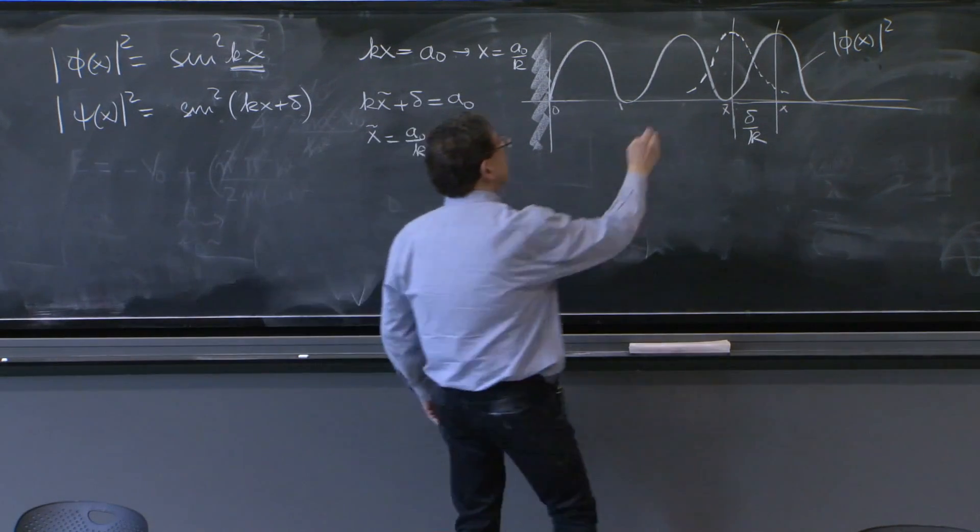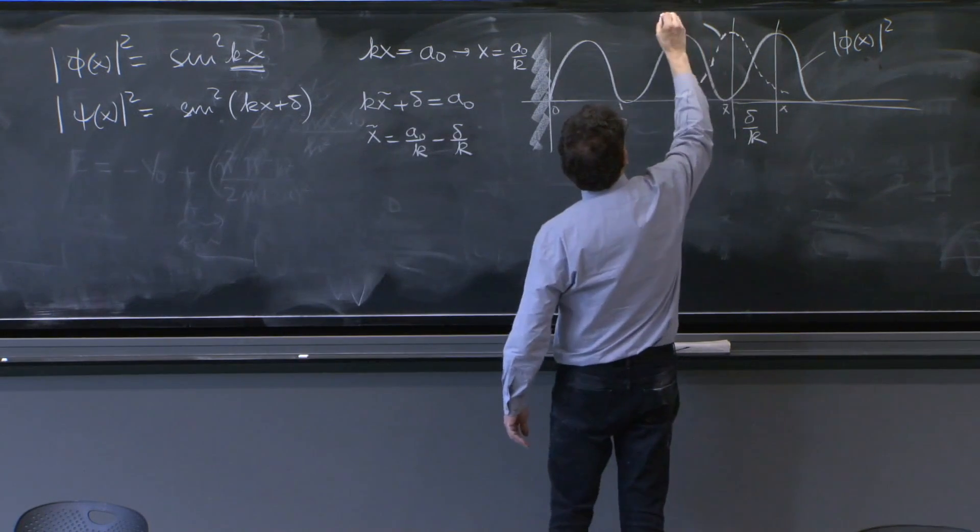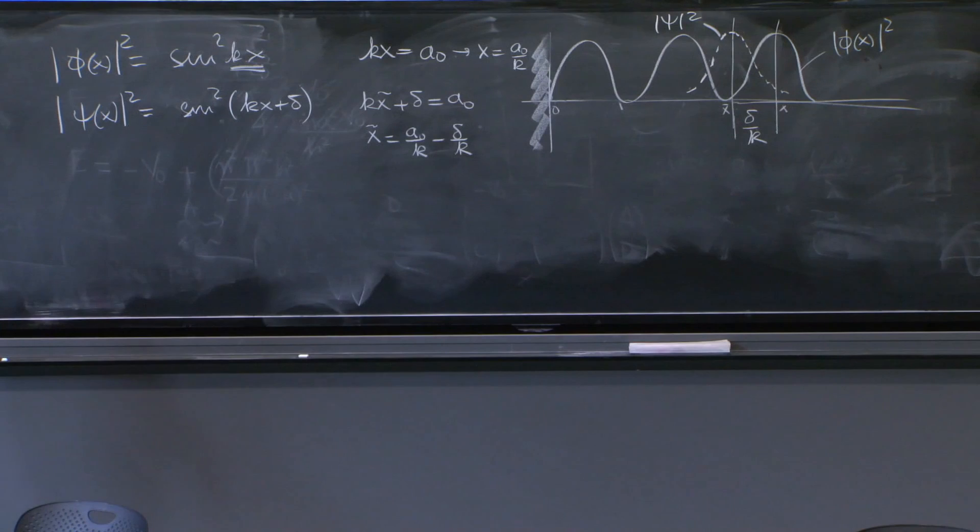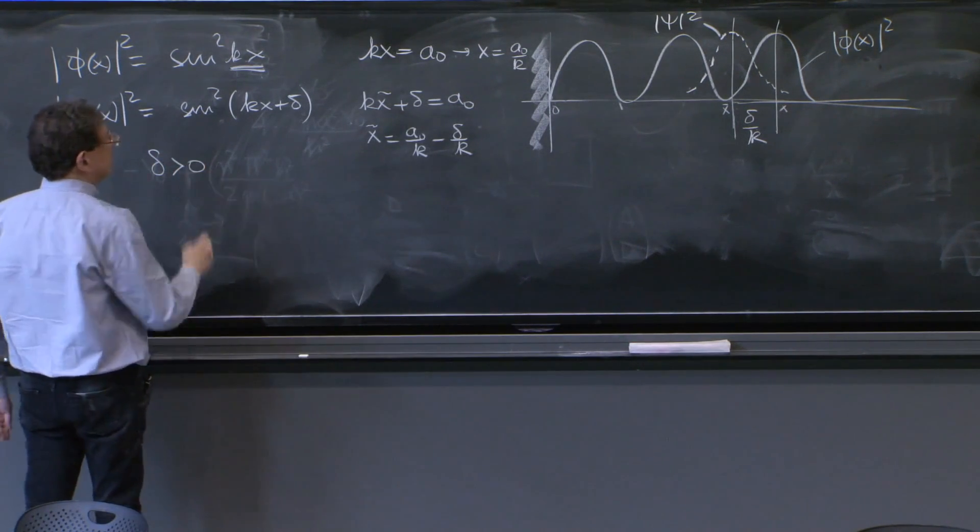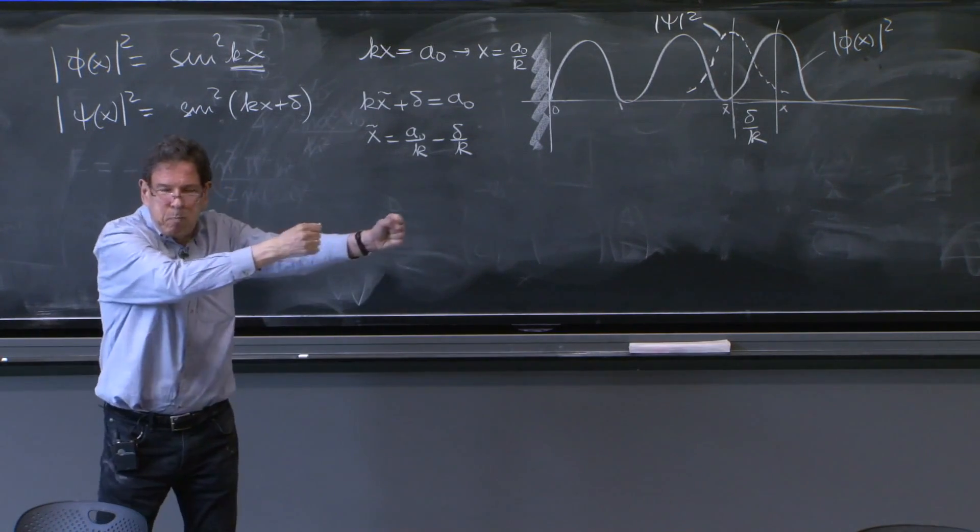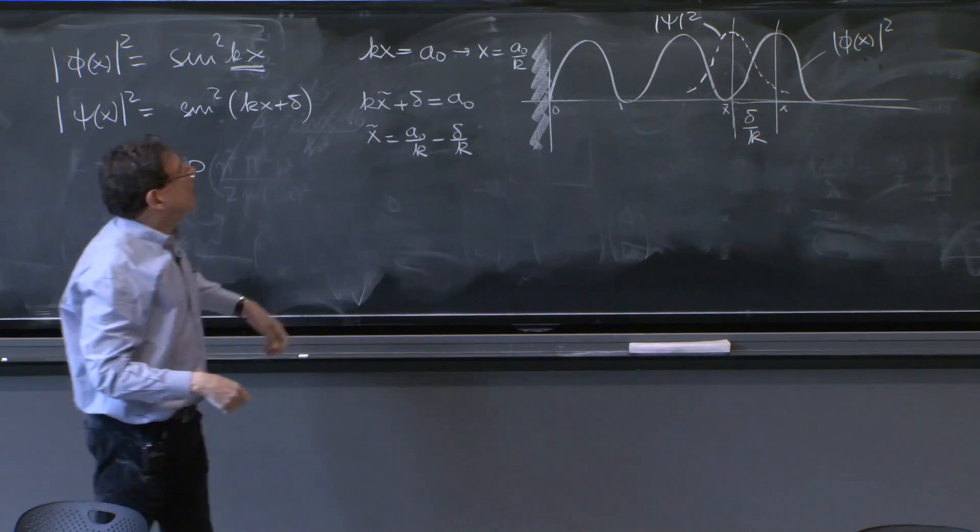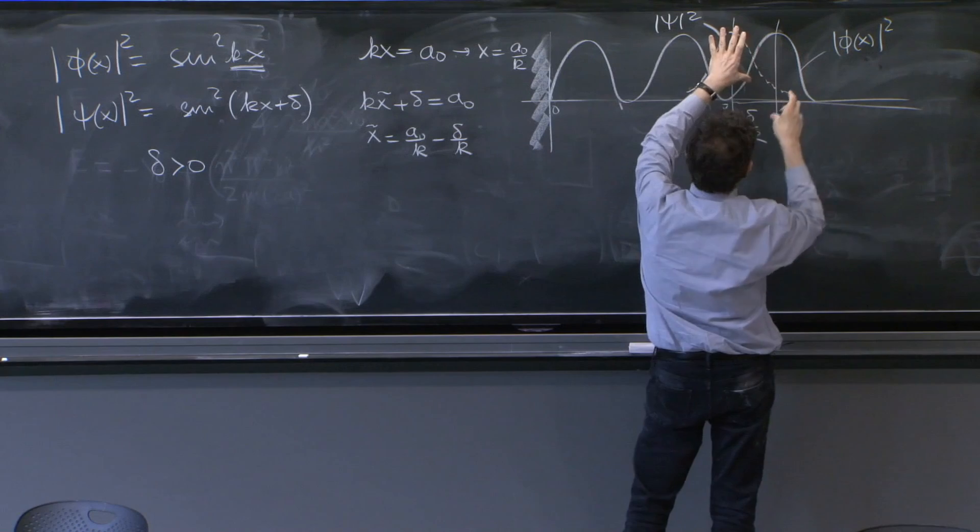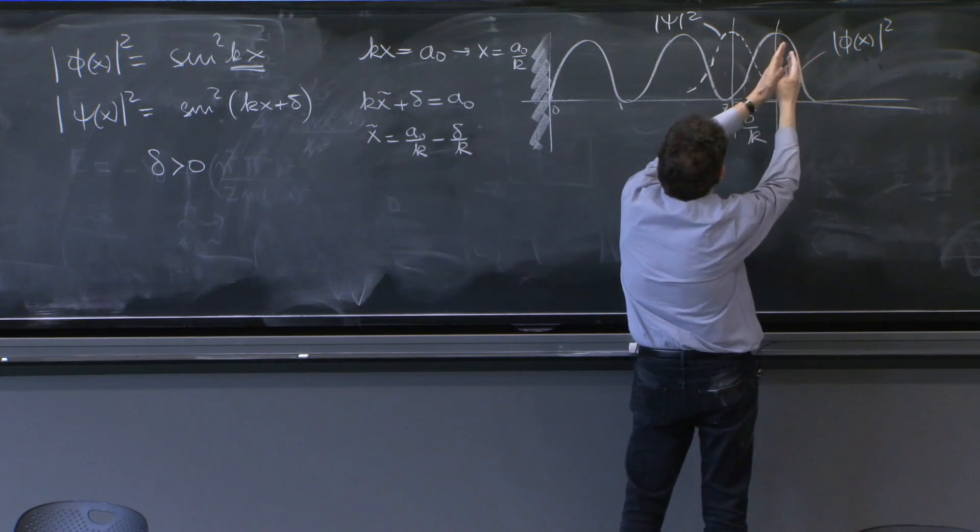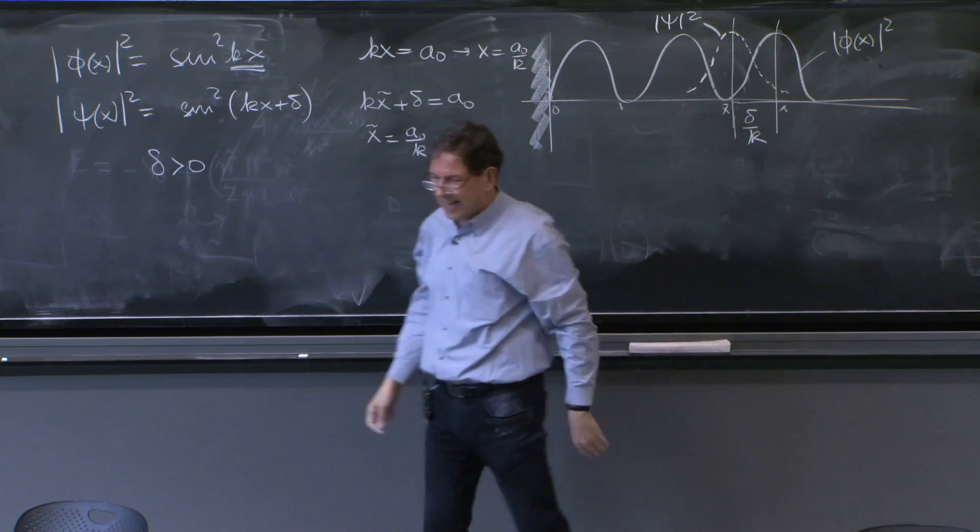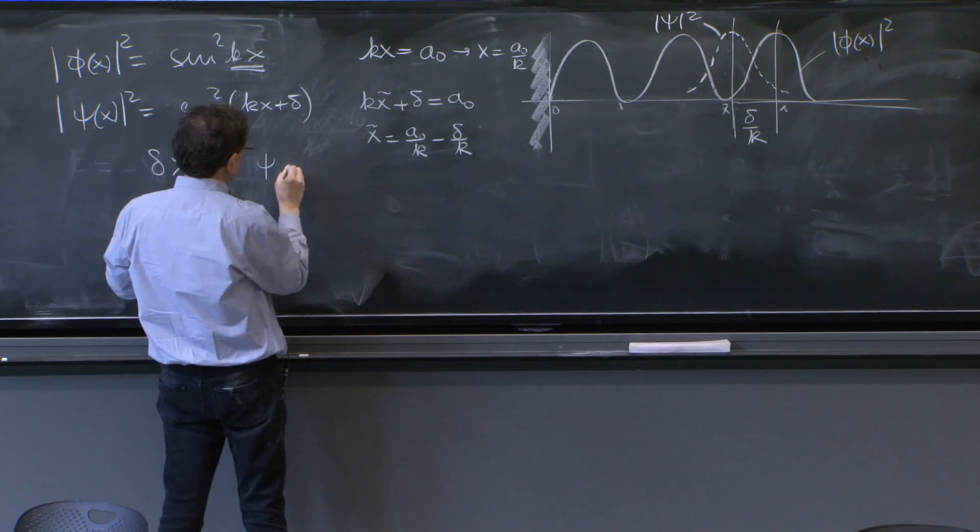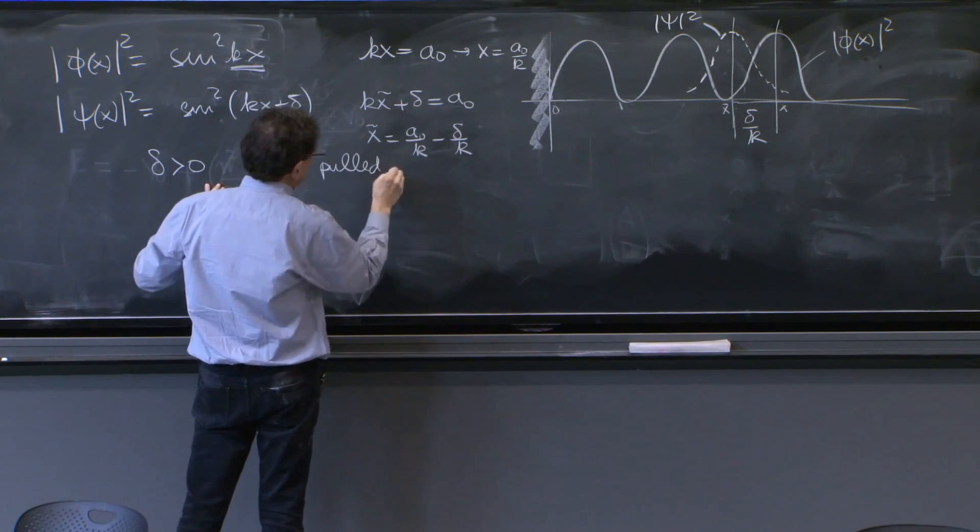So this psi, this is psi squared. So we conclude, for example, that when delta is greater than 0, the wave is pulled. Delta equals 0, the two shapes are on top of each other. For delta different from 0, the wave function is pulled in. So delta greater than 0, psi is pulled in.